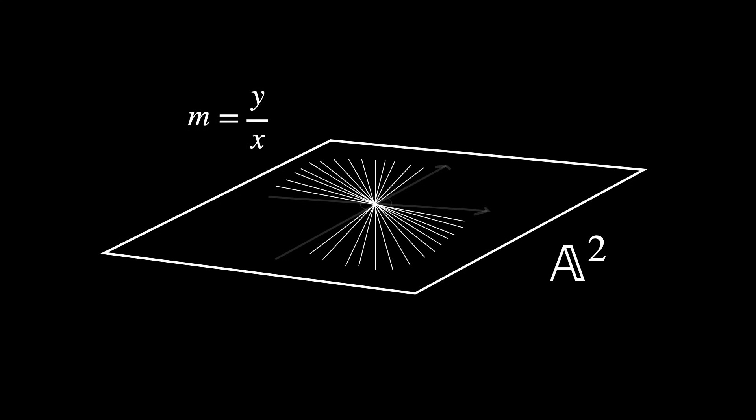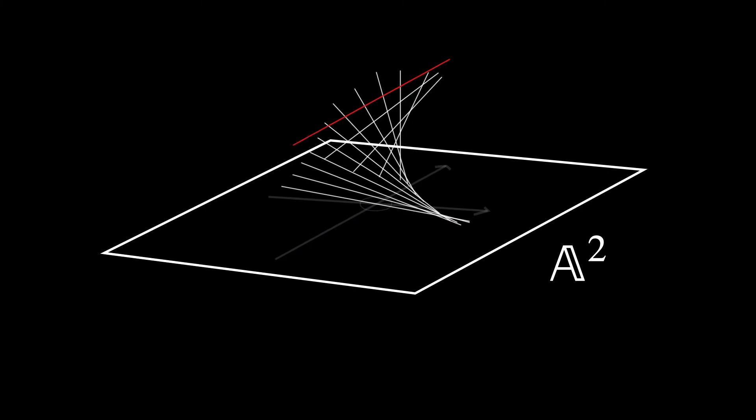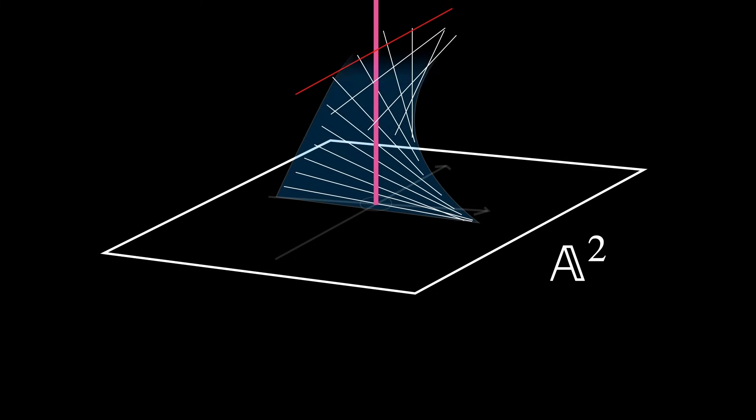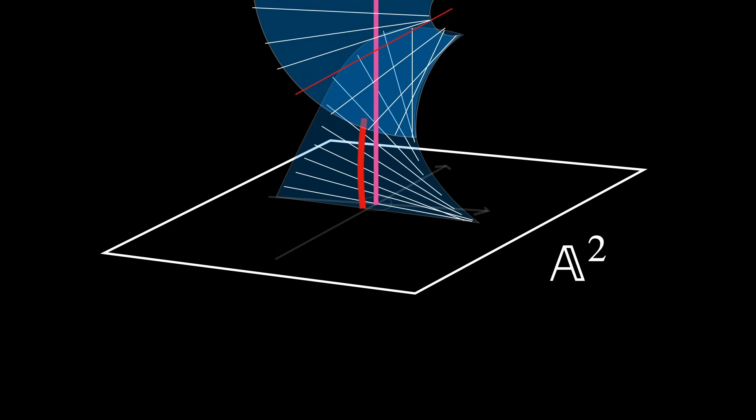However, the slope becomes problematic for vertical lines, because when x equals zero, it results in m equals infinity. Thus, to handle this, we have to blow up the origin. By blowing up the origin, we replace a single point with points unique to each individual line and thus create a projective line. By doing so, we introduce projective coordinates, where the slope m equals u over v captures the slope of each line.